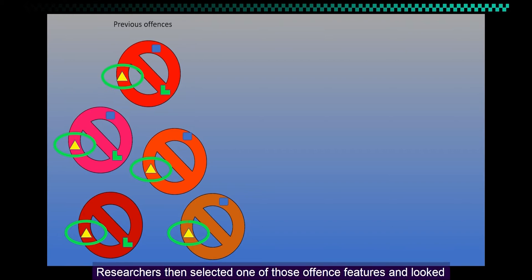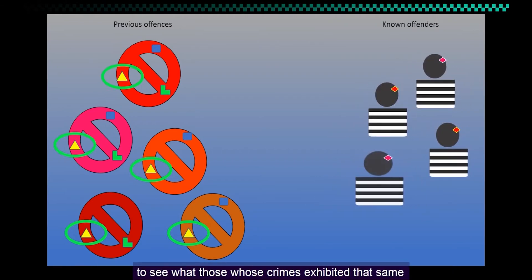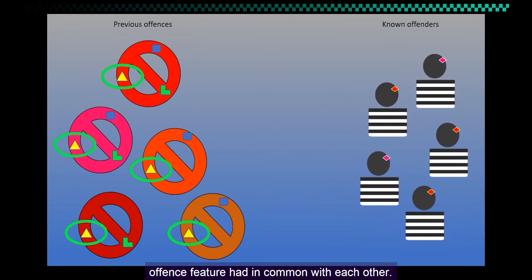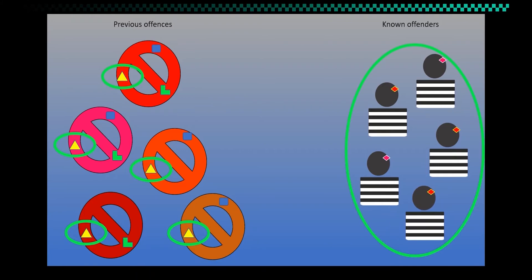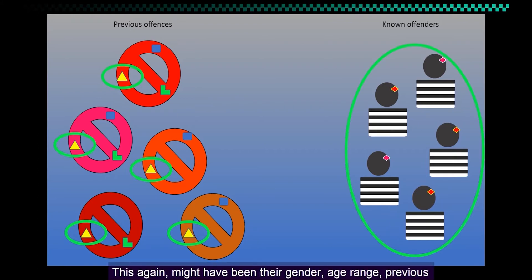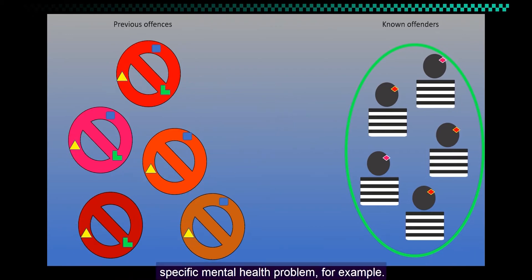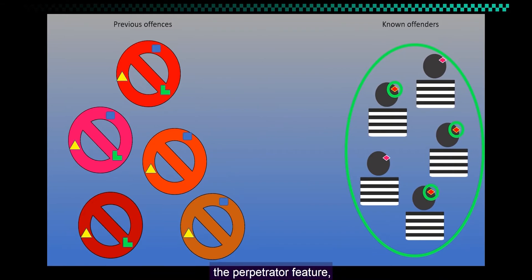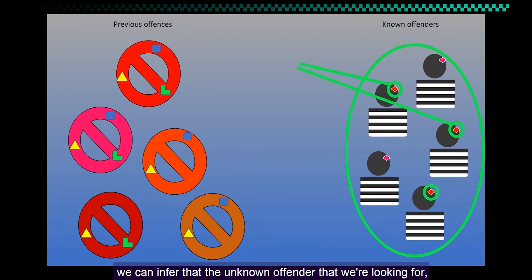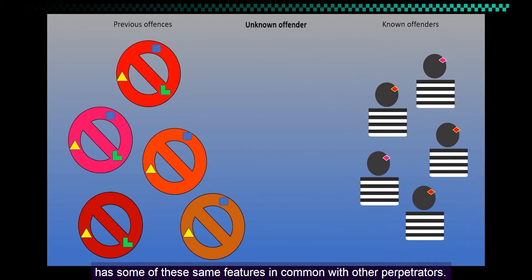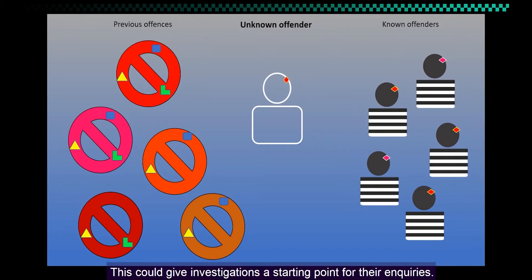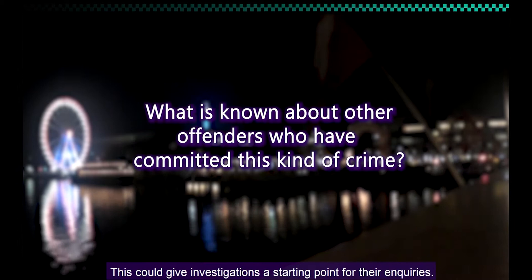Researchers then selected one of those offense features and looked at offenders who had been convicted to see what those whose crimes exhibited that same offense feature had in common with each other. This might have been their gender, age range, previous criminal experience, or a specific mental health problem, for example. Based on this connection between the offense feature and the perpetrator feature, we can infer that the unknown offender we're looking for has some of these same features in common with other perpetrators. This could give investigations a starting point for their inquiries.